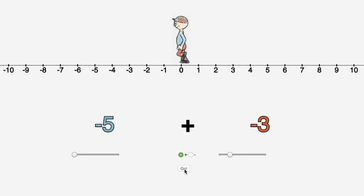Here Stefan adds negative five and negative three to give negative eight. Notice he is walking forward in both of these sums.